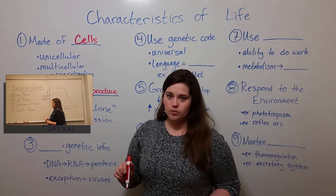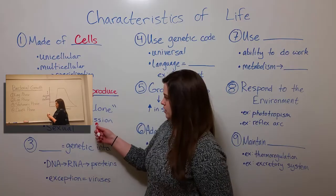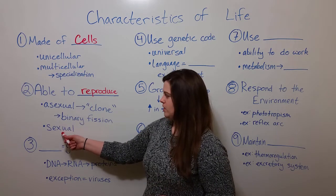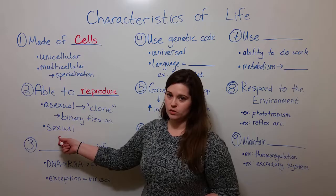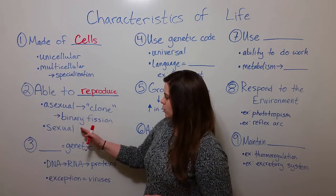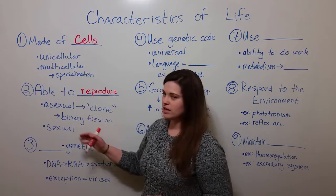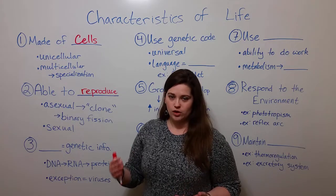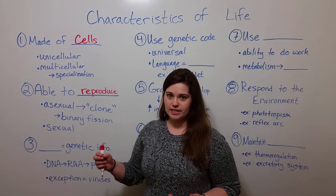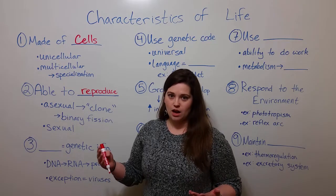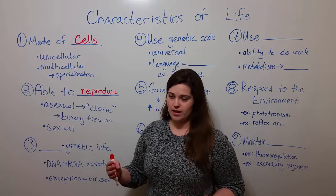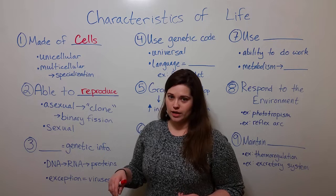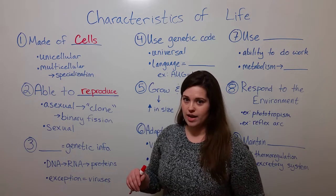If you're interested in learning more about binary fission, please see my video on that topic. There's also sexual reproduction. This is how animals reproduce, as well as many other types of organisms. This is when a gamete from one organism and a gamete from another organism meet — for example, when a sperm fertilizes an egg — and the offspring is genetically different from both parents because it has genetic information from both. That is sexual reproduction.